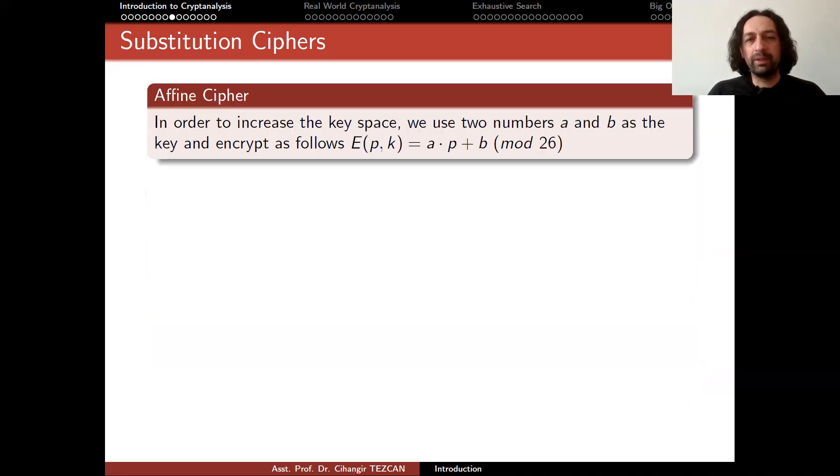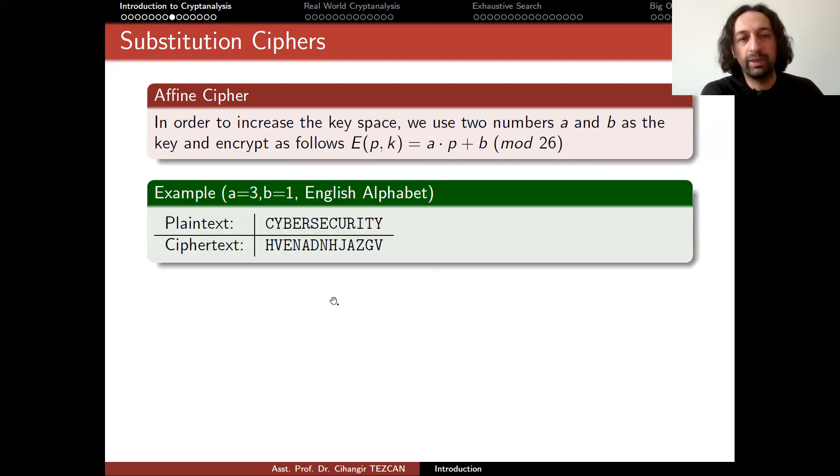How can we strengthen the system? We can introduce more complexity in the encryption algorithm. In this case, we can do something like this. This is called an affine cipher. In order to increase the key space, we use two numbers a and b as the key and the encryption function is as follows. When you take the letter as input and k, which is in this case a and b, two numbers, you perform the encryption as follows. You look at the number that this letter actually represented in the alphabet. You multiply it with a and you add b. In this case, it might be something bigger than 26, but there are 26 letters in the English alphabet. So you take modulo 26 and you write the result down as your encryption.